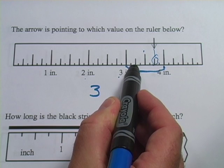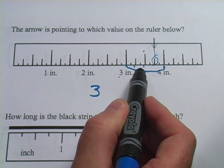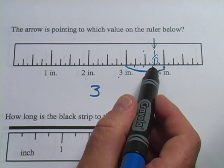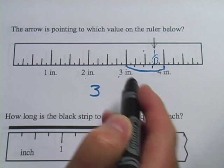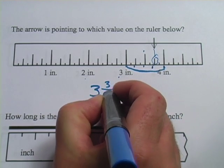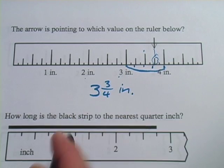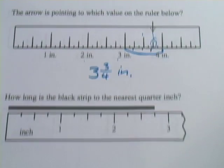So I could start here with one quarter, two quarters. It's the same as one half. Three quarters. And that's the mark that the arrow is pointing to. So this is three and three quarters inches. Let's try another one like that.